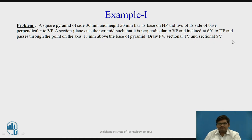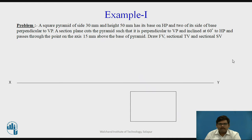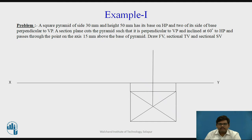Let us proceed with the drawing. We draw the XY line or reference line. As the pyramid is resting on HP, we start with the top view. In the top view we have a square of 30 mm side, and we join the corners since we are working on a pyramid. Let us project these points to get the desired front view. This is a square pyramid resting on its base on HP with two of its sides of base perpendicular to VP — this base edge and this base edge are perpendicular to VP, as seen in the top view.